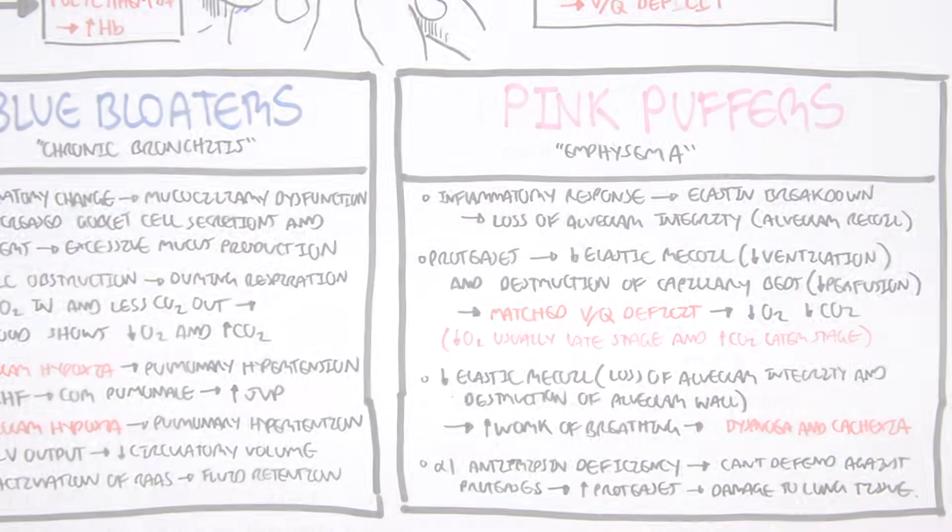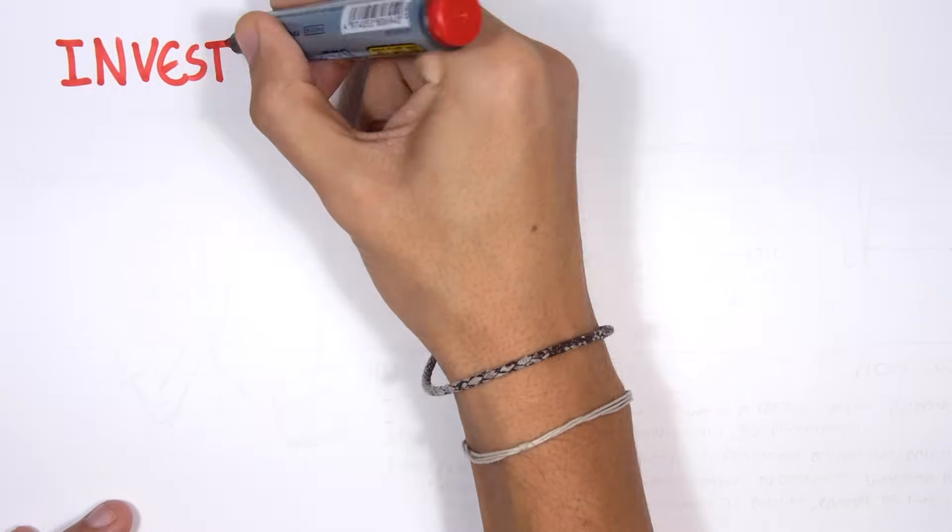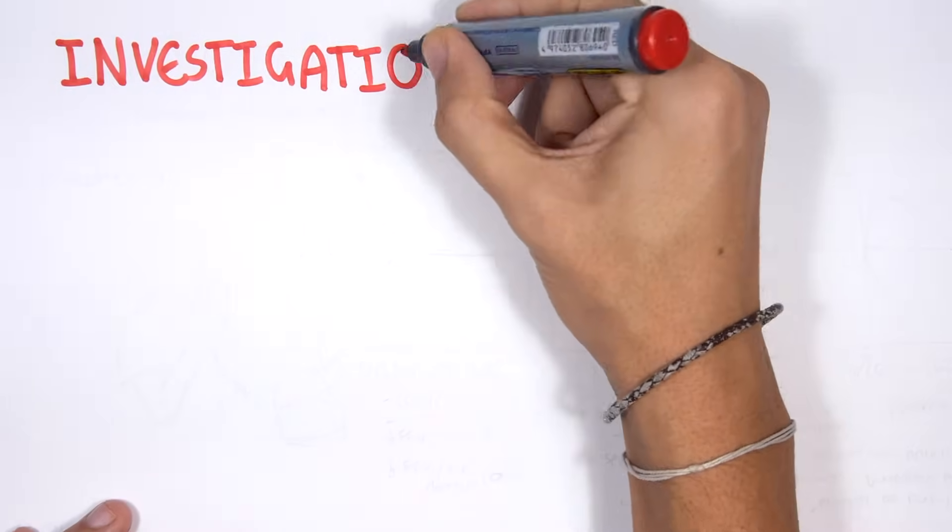So emphysema are your pink puffers, chronic bronchitis are your blue bloaters. Now let's proceed to investigations. What sort of investigations would you perform if someone presents with difficulty breathing, sputum production, as well as a cough?